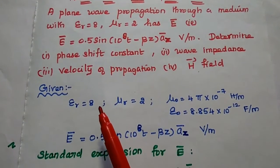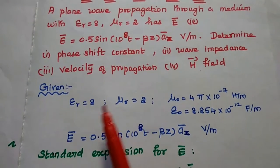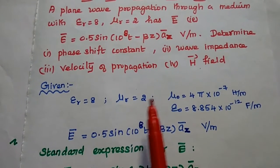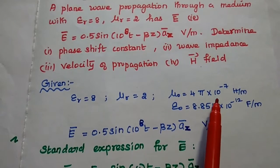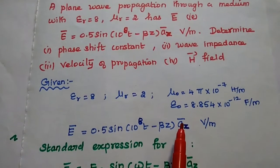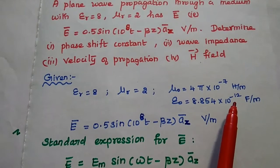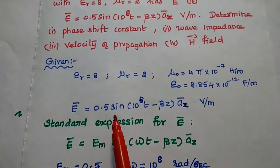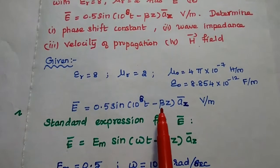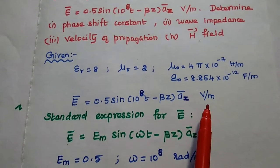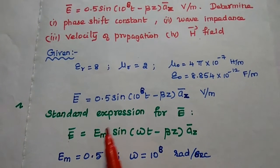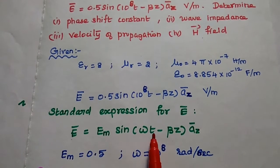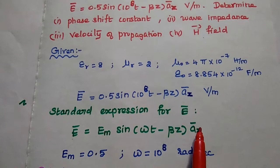The given data: epsilon_r is 8 (relative permittivity) and mu_r is 2 (relative permeability). The constant mu_naught equals 4π × 10⁻⁷ H/m, and epsilon_naught equals 8.854 × 10⁻¹² F/m. The electric field is given as E = 0.5 sin(10⁸t − βz) a_z volts per meter. The standard expression for electric field is Em sin(ωt − βz) a_z.